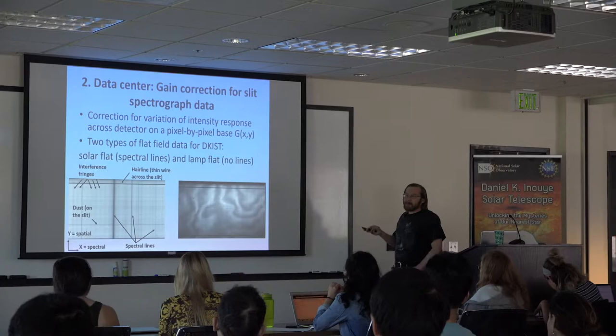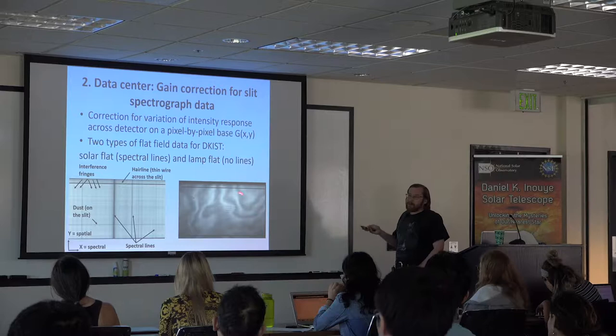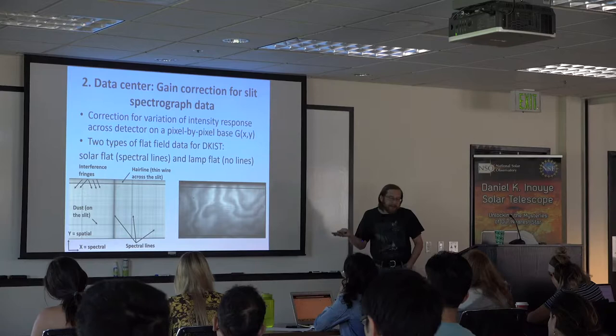The difference is that in the lamp flat, everything that is not homogeneous is something you have to correct. In the solar flat, there are structures you do not want to remove from the data because you still want to see the spectral lines.